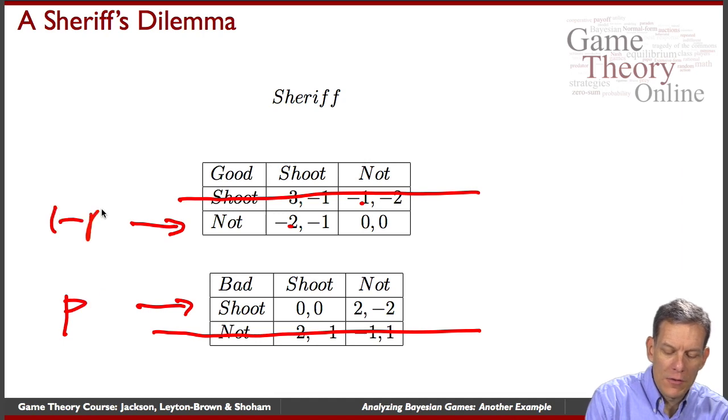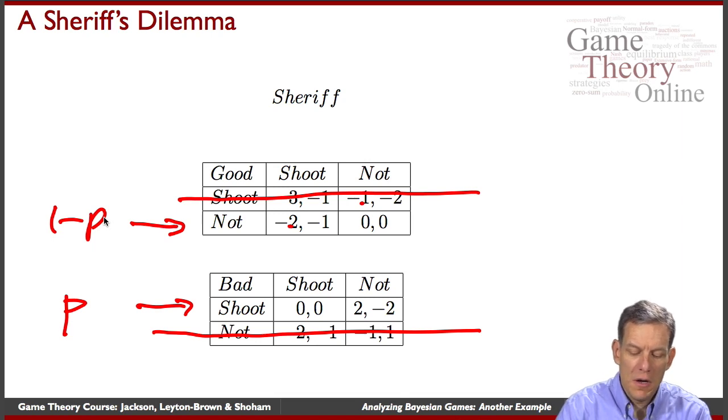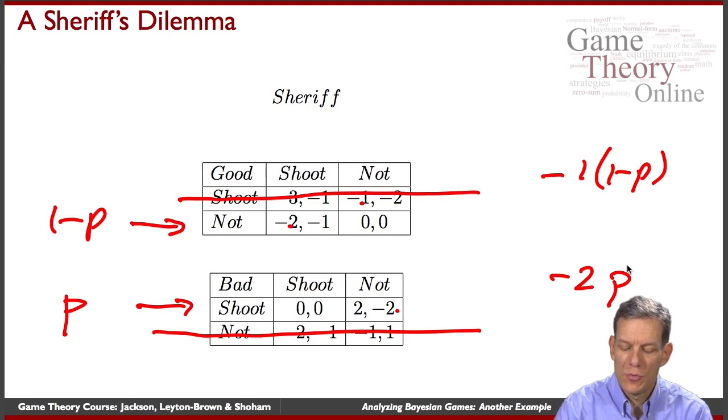And so now we've got a probability p down here, one minus p here, and we want to ask what's the sheriff's best reply. Well basically what happens if they shoot? What are they going to get? They get zero down here, the sheriff gets a minus one up here, so you're getting minus one times one minus p if they shoot. If they don't shoot what do they get? Well they get zero up here and minus two down here, so they get a minus two times p. And so we can think of the situations: when is it better to shoot, when is it better not to?